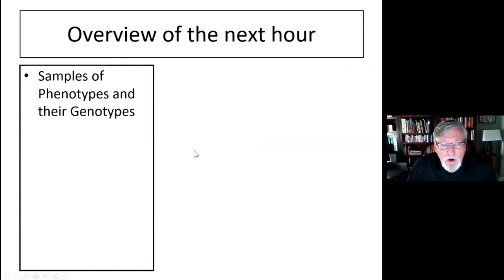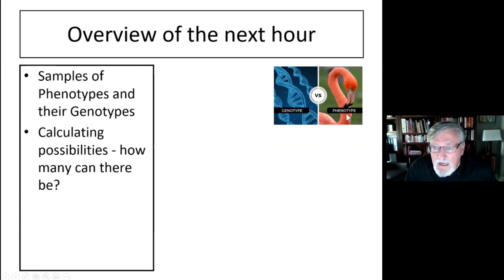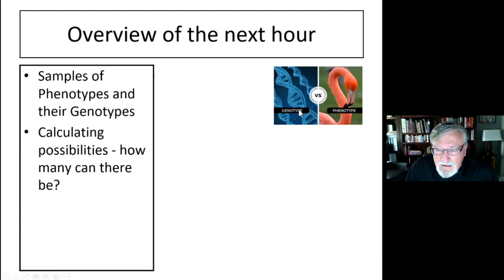Let's start with two terms you need to know: phenotype and genotype. Phenotype, as you can see by this flamingo, it's what you see. Genotype is what causes what you see to be there — it's the stuff you can't see under a microscope, and you're just going to have to trust that the equations are going to work out for you.